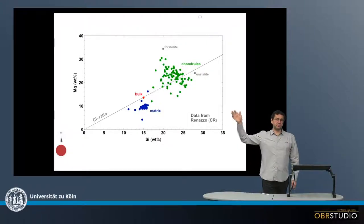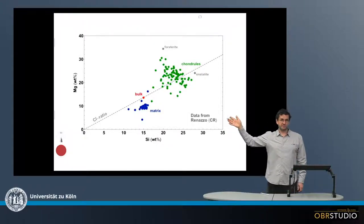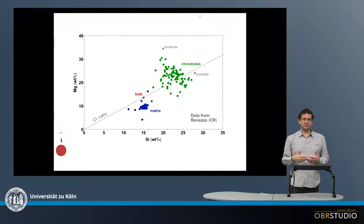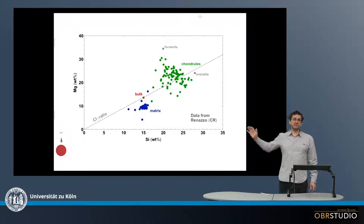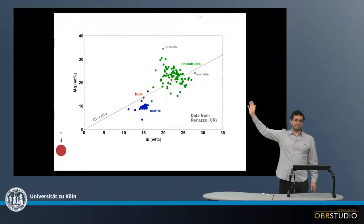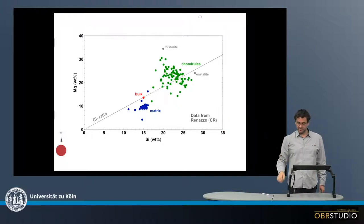This is one example for a chondral matrix complementarity plot, as complementarity exists for a number of element pairs in the various chondrite groups. In this particular one there is silicon on the x-axis and magnesium on the y-axis, both in weight percent.